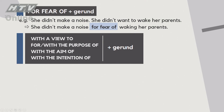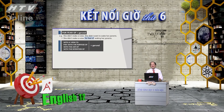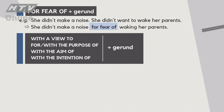Phần tiếp theo: 'with a view to', 'for', 'with the purpose of', 'with the aim of', 'with the intention of' - đằng sau cộng với verb-ing. Chú ý đặc biệt: chữ 'to' trong 'with a view to' là một giới từ (preposition), không phải to-infinitive, nên đằng sau là verb-ing. Giống như 'be used to', 'be accustomed to' - những 'to' đó là giới từ, đi với verb-ing.